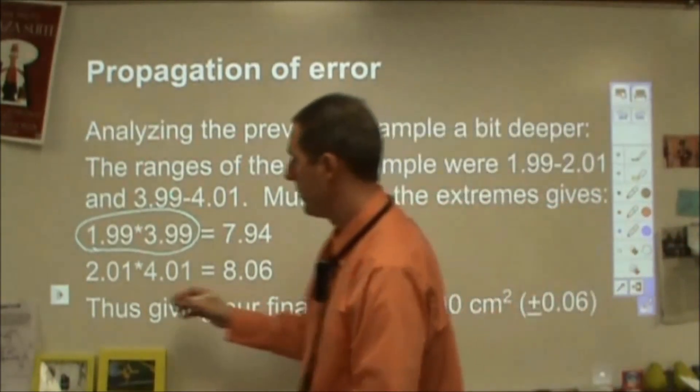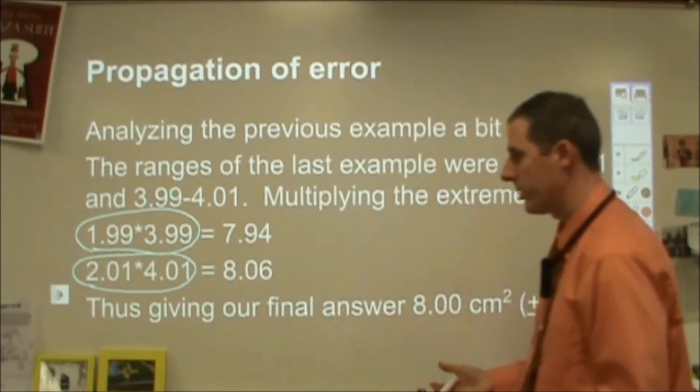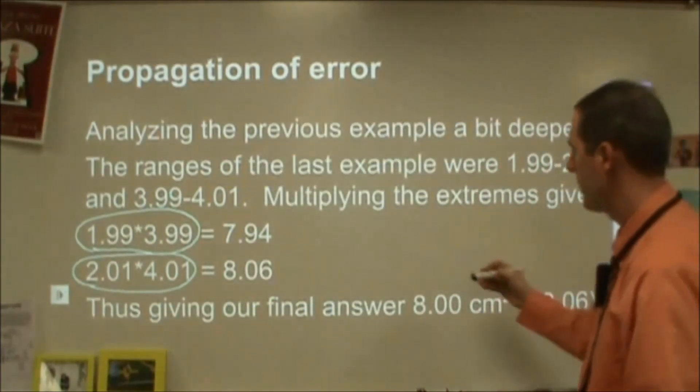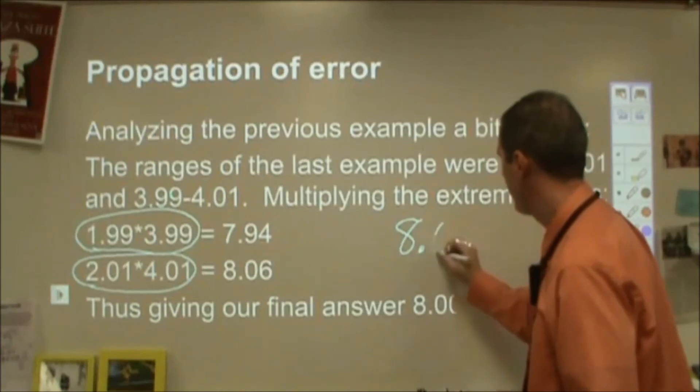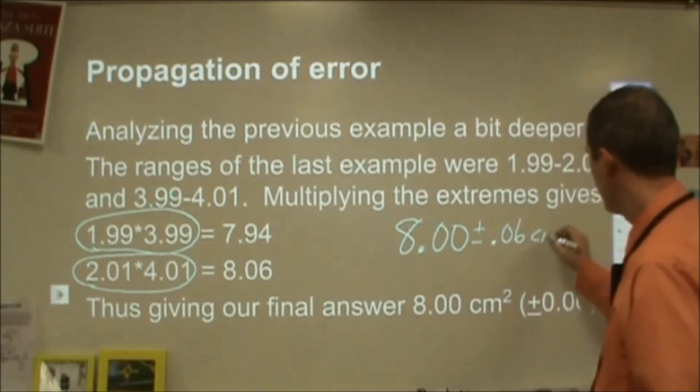If I have the largest values possible, 2.01 and 4.01, and I multiply those, that comes out to be 8.06. Okay. Well that's perfect. If I go back to my answer, it was 8.00 (±0.06) cm².